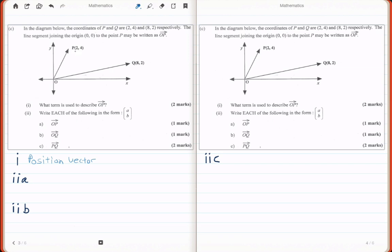The coordinate is just a singular point in space, but to write this in vector form, we convert the coordinate into a column matrix. So OP is essentially the vector 2, 4.